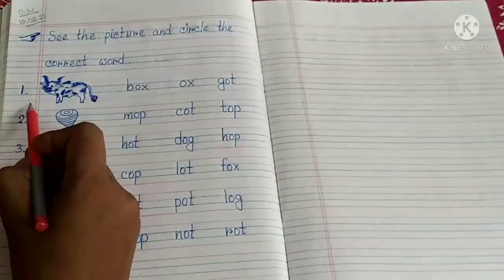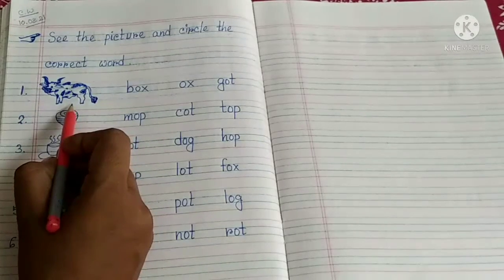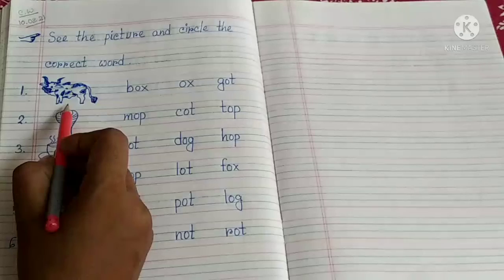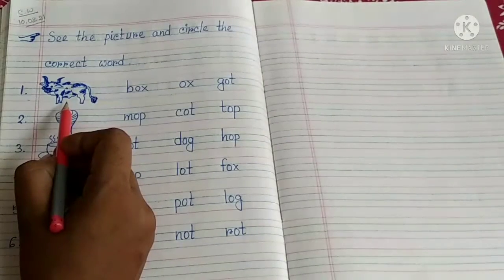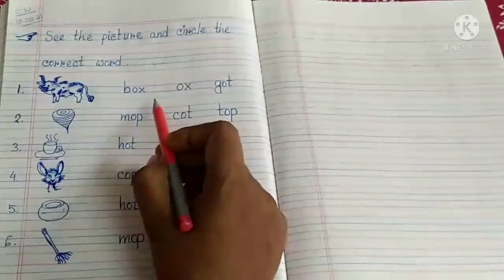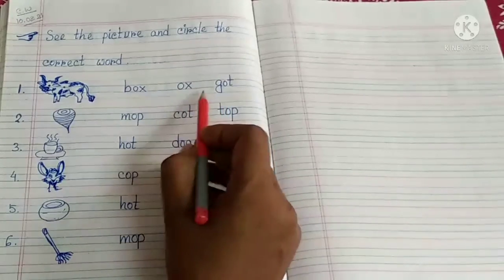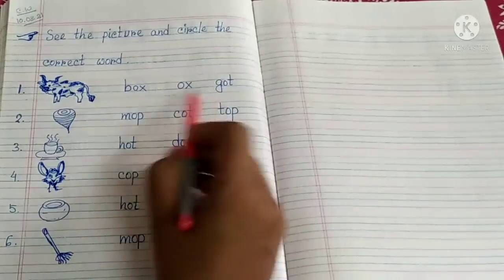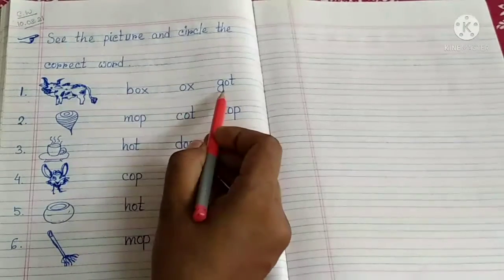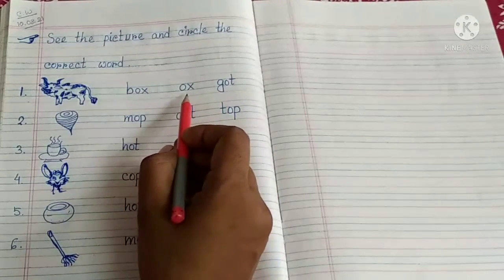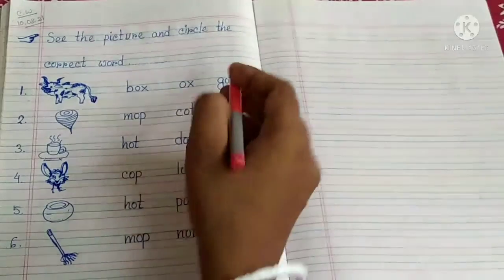So first picture, look here children. Number 1. What is this? Say ox, right. So what is the spelling of ox? O-X, ox. Now find it from here. You can see three words here. Now from here you have to find ox. First word is box, ox, got. So the second word is the correct word. Let's circle it.